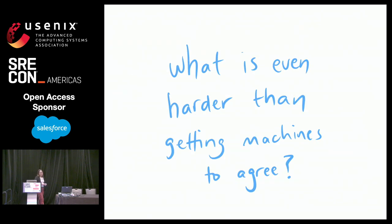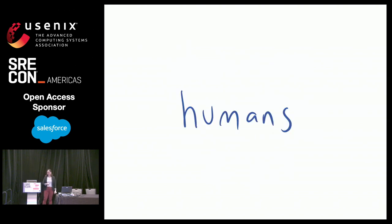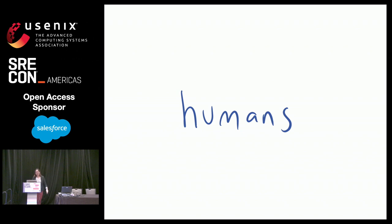I want to close on a more open-ended question: what is even harder than getting machines to agree? And that is getting humans to agree. If you've ever tried to get a group of more than four people to figure out where to go to lunch together, it's so much harder. Unlike database timestamps, it's really, really hard to know if humans have a shared state of the world.